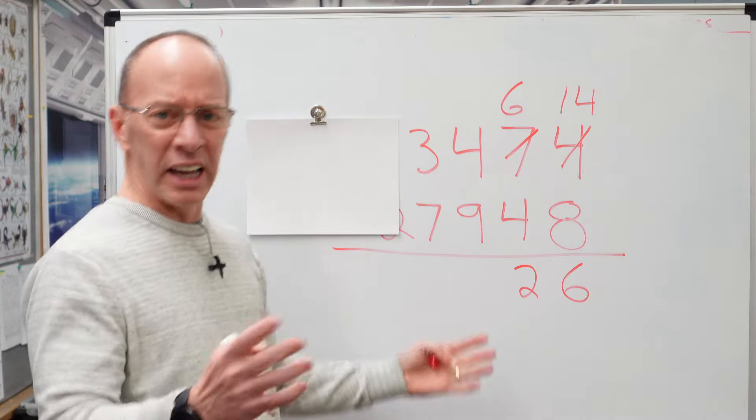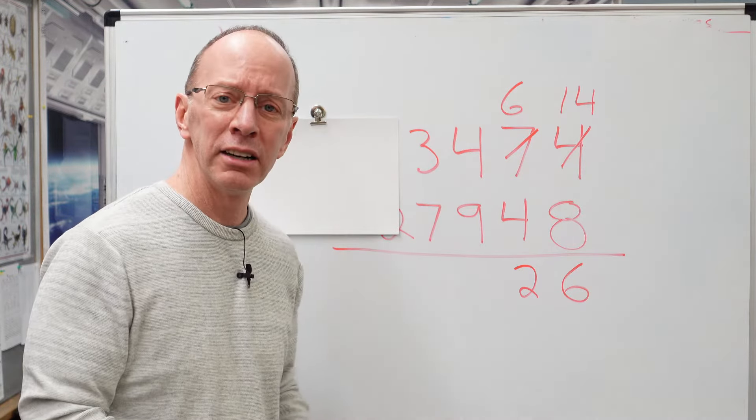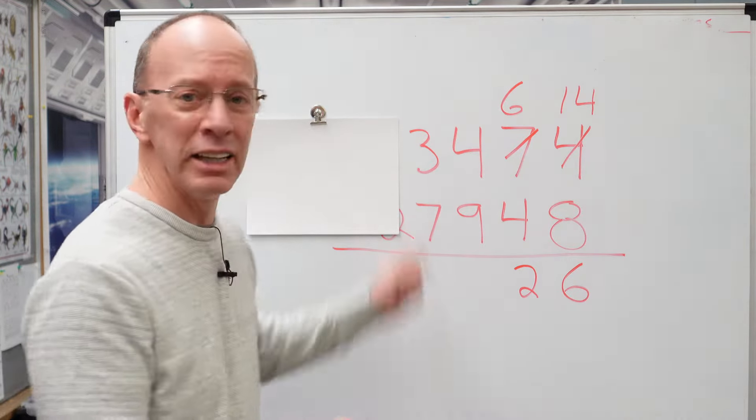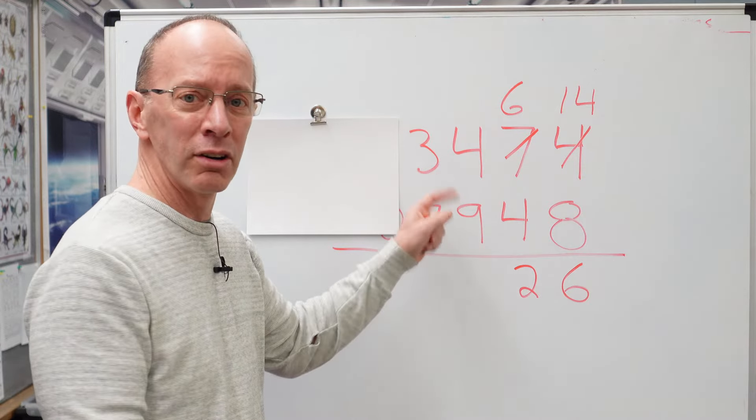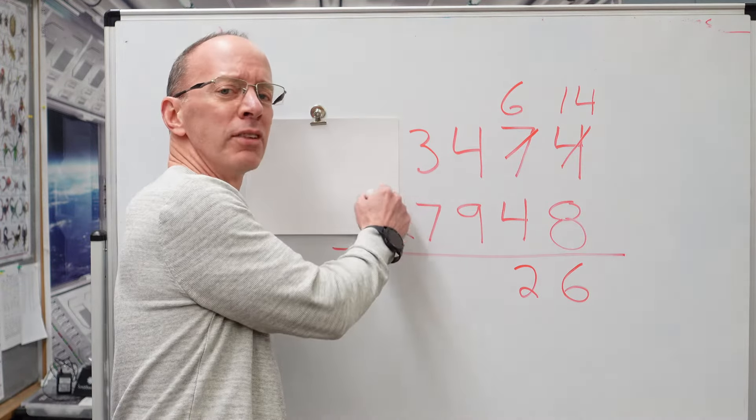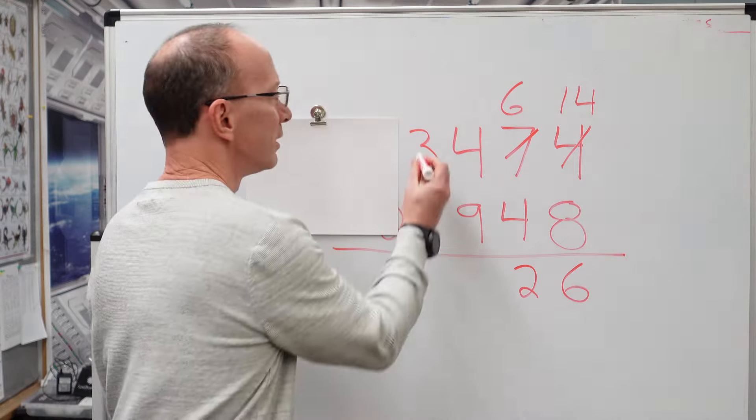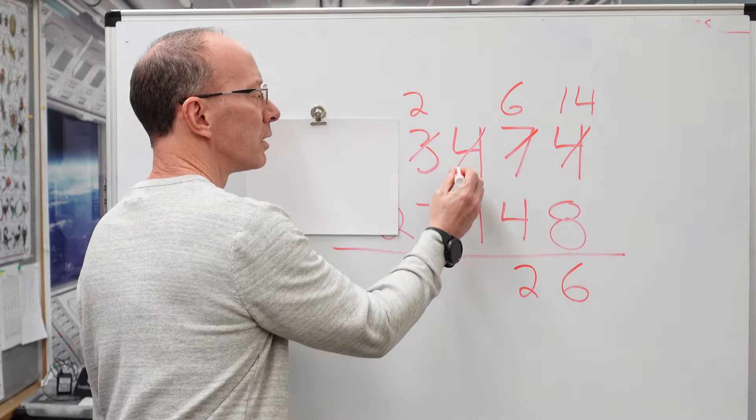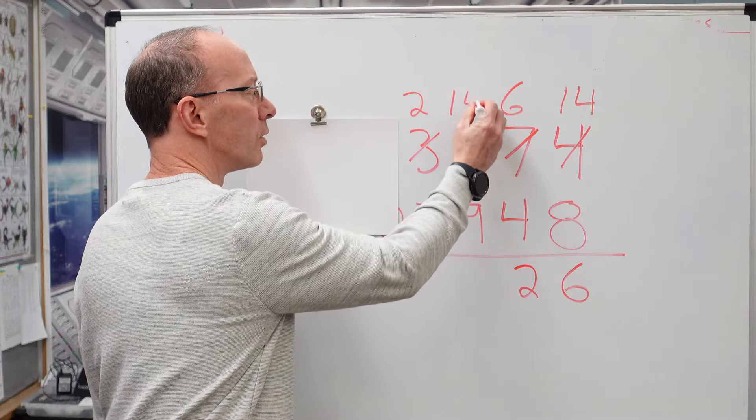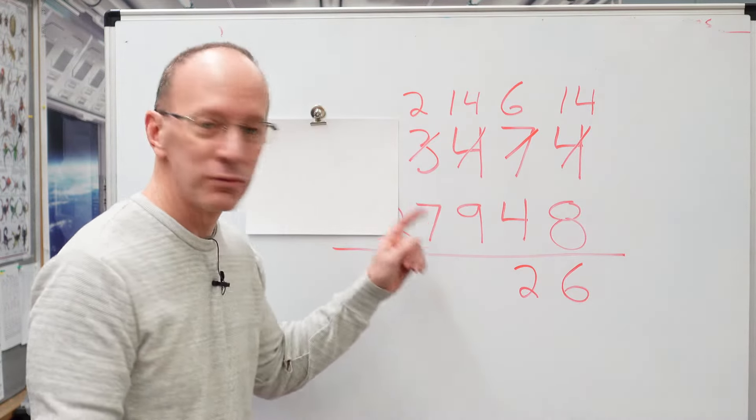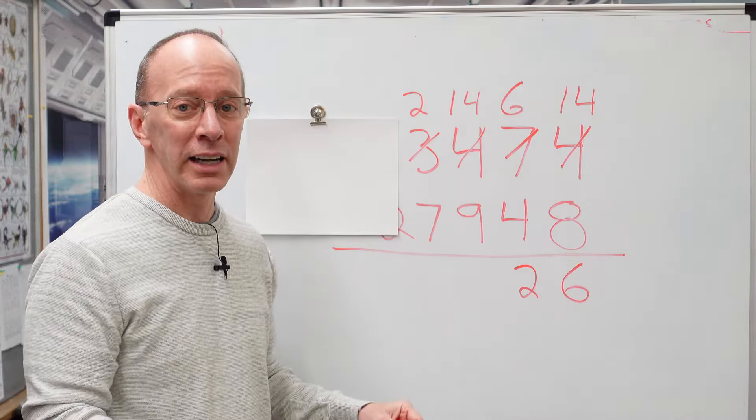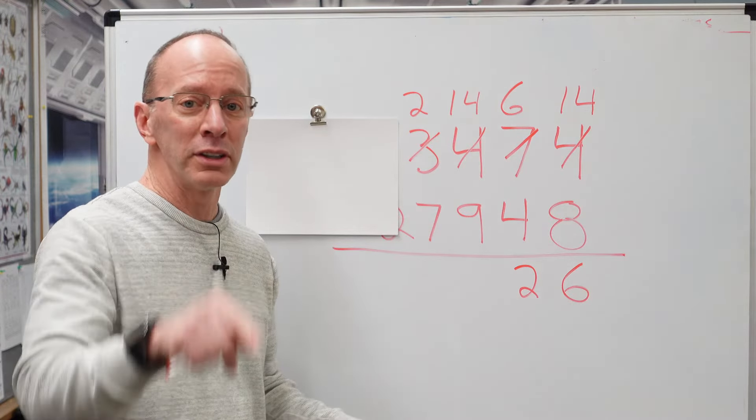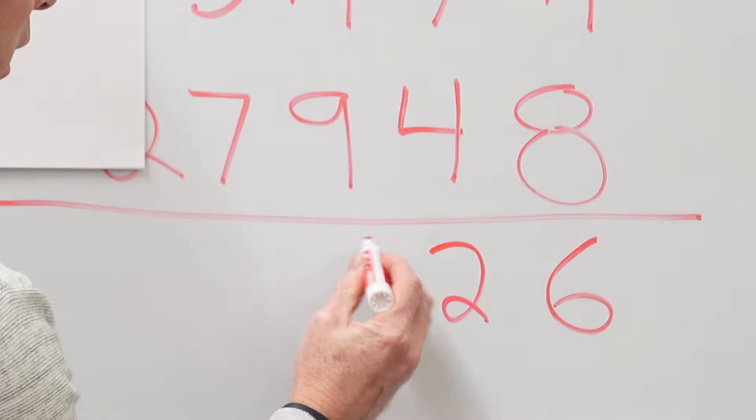I'm going to move this paper over here. I think we can start dealing with some of these other numbers. Not too scary right now. 4 minus 9. Can't do it. This number right here, too small. Need to borrow from our next door neighbor. Hey, can I borrow some from you? So I just borrow 1 from that 3, make this a 2, put a line through here. This is a 14. 14 minus 9 is 5. So I put a 5 right here.